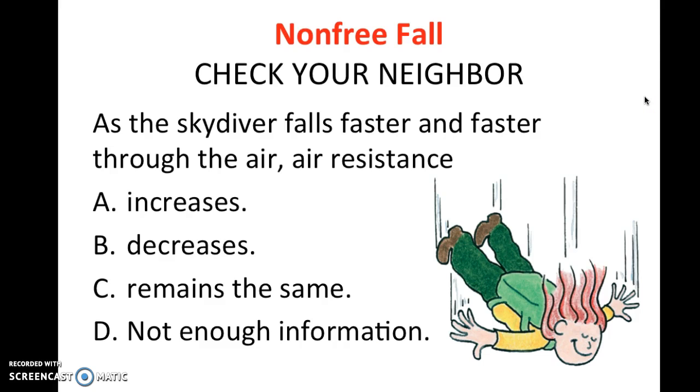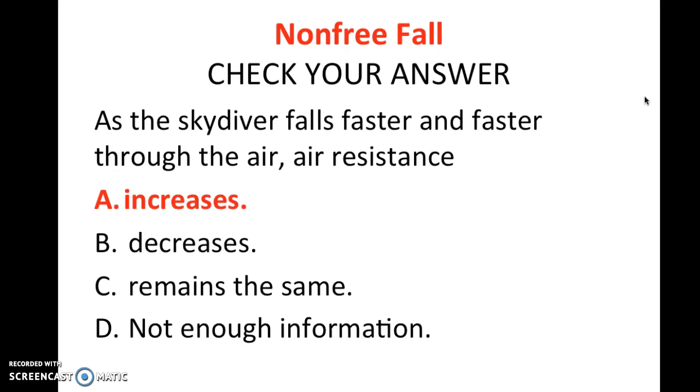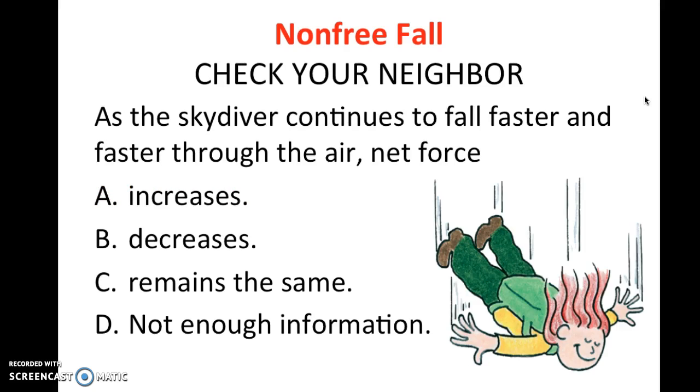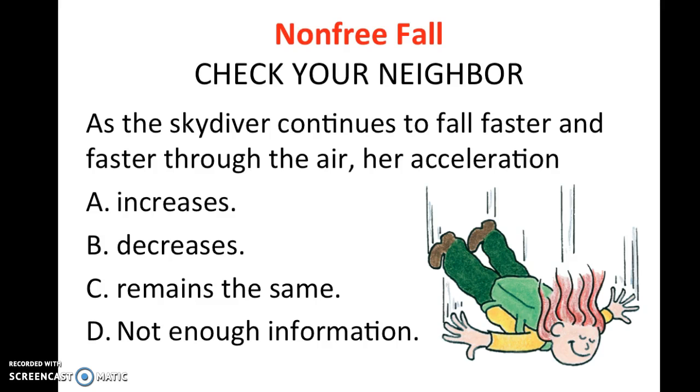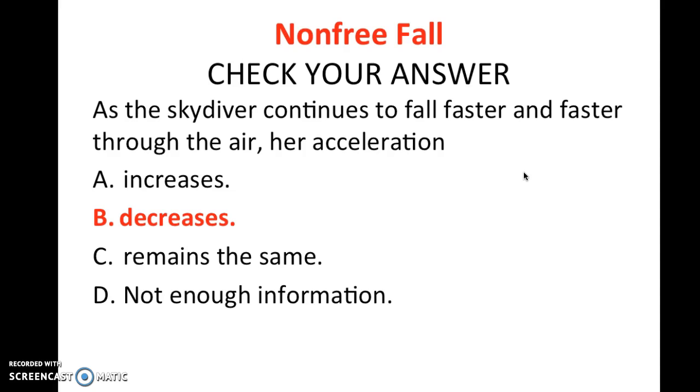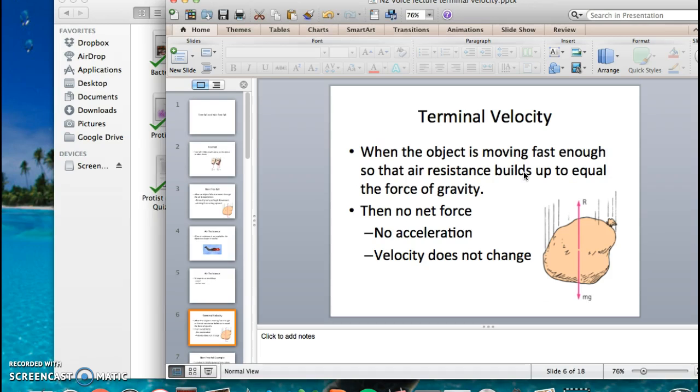As the skydiver falls faster and faster through the air, the air resistance increases. Because recall that air resistance depends on speed and surface area. As the skydiver continues to fall faster and faster, the net force on the skydiver decreases. And that's because the air resistance is getting close, the force of air resistance is getting closer to the force of the object's weight. Now if the net force decreases, what does her acceleration do? It also decreases because net force is directly proportional to acceleration. Alright, that should help you with that portion of the guided worksheet.